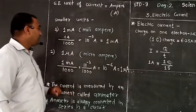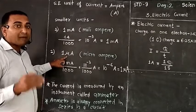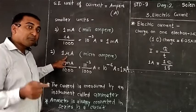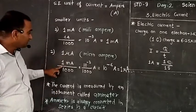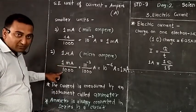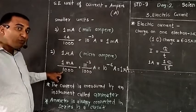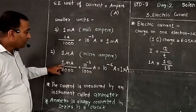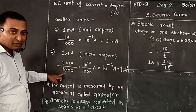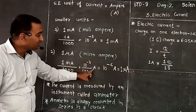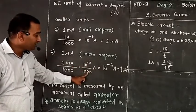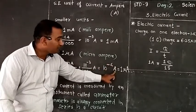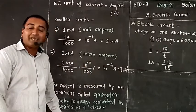Again we have one more smaller unit — that is microampere. Micro means 1000th part of that milliampere — that means 1 milliampere divided by 1000. Then one part of 1000 is called microampere. So how is it expressed? 1 milliampere divided by 1000 means 10 raised to minus 3 ampere divided by 1000, which equals 10 raised to minus 6 ampere, and that is equal to 1 microampere.